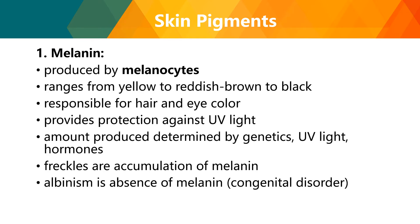For skin pigments: first, melanin, produced by melanocytes, ranges from yellow to reddish brown to black. It is responsible for hair and eye color, and provides protection against UV light. The amount produced is determined by genetics, UV light, and hormones. Freckles are an accumulation of melanin. Albinism is the absence of melanin, a congenital disorder — meaning the person has an abnormality in the development or production of melanin from birth.